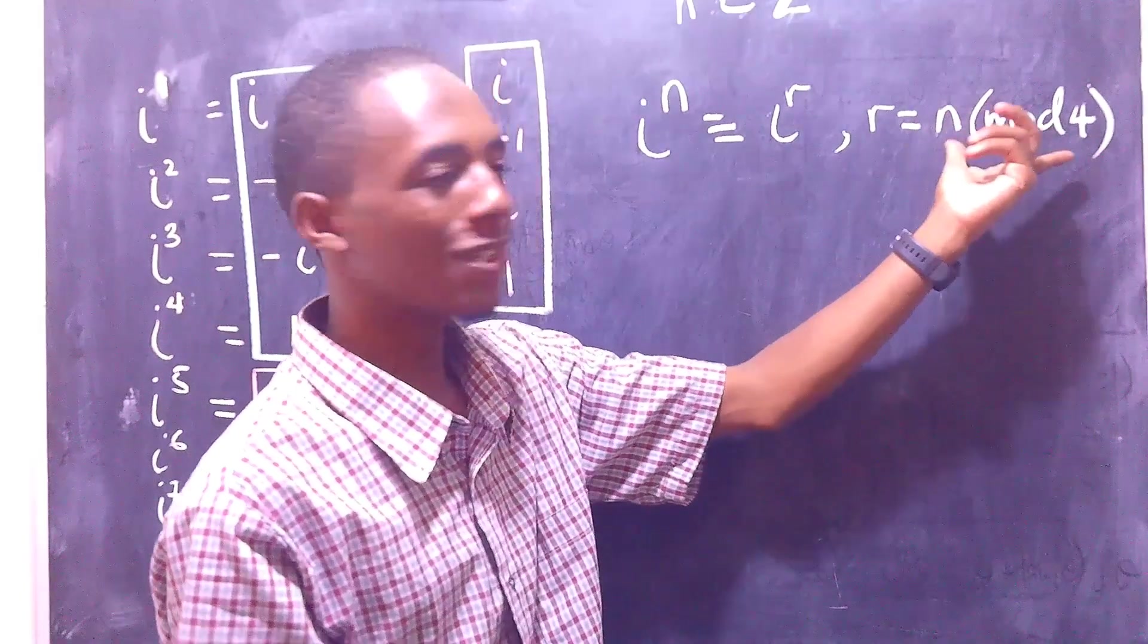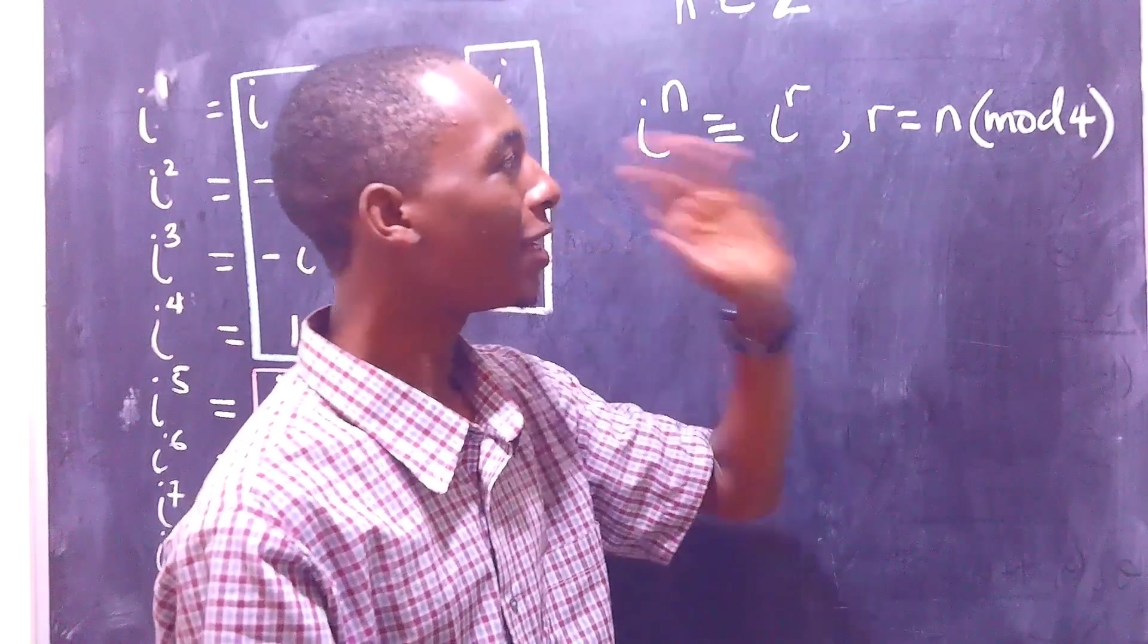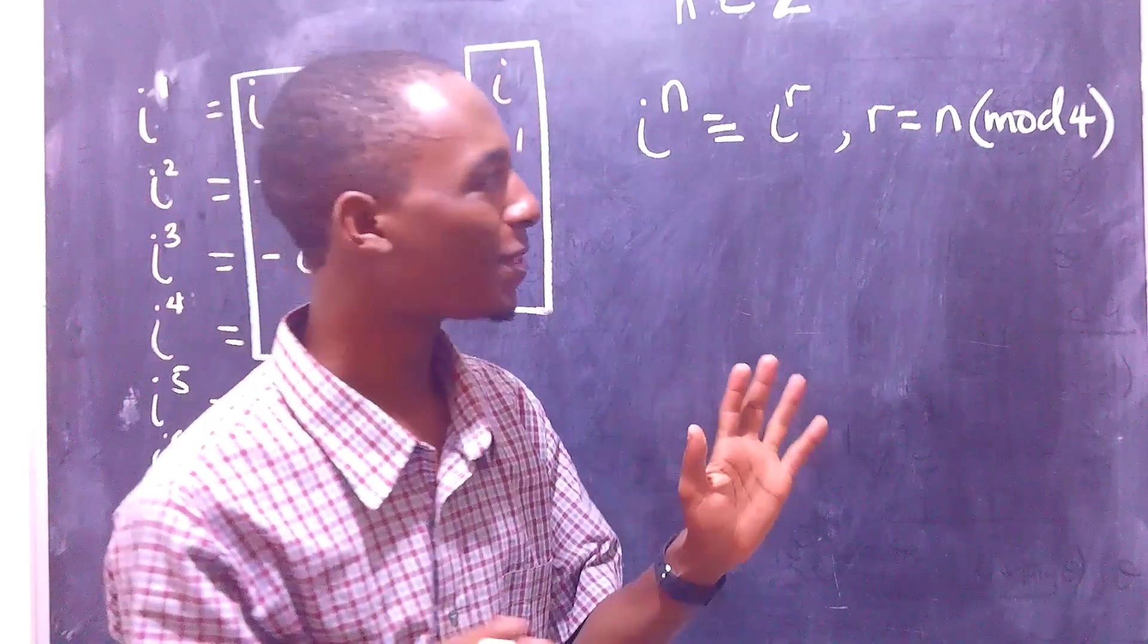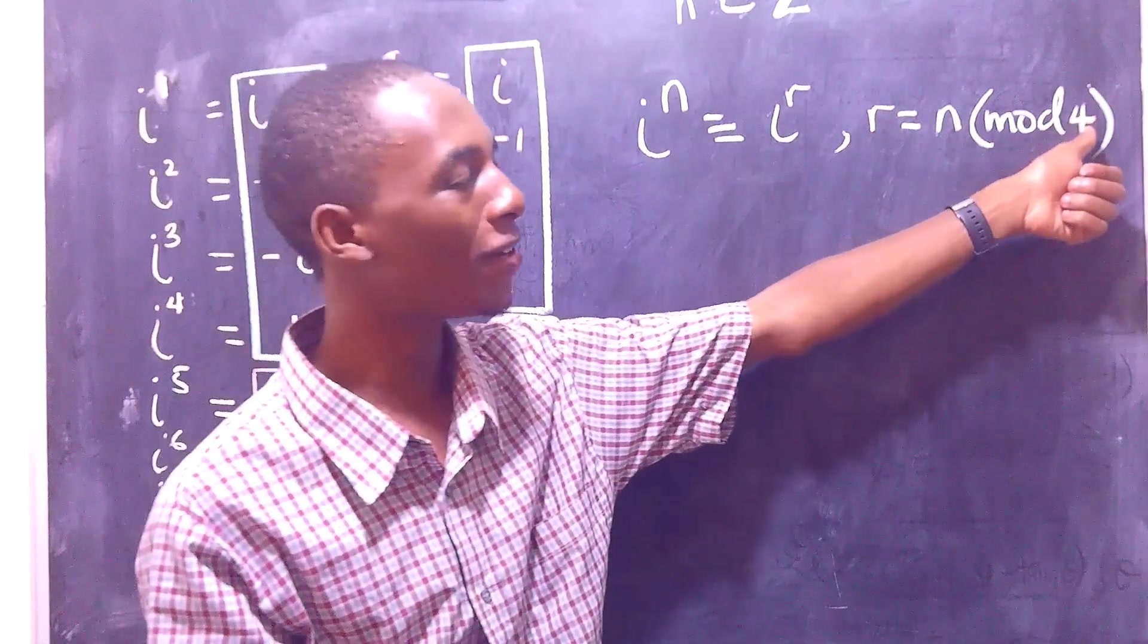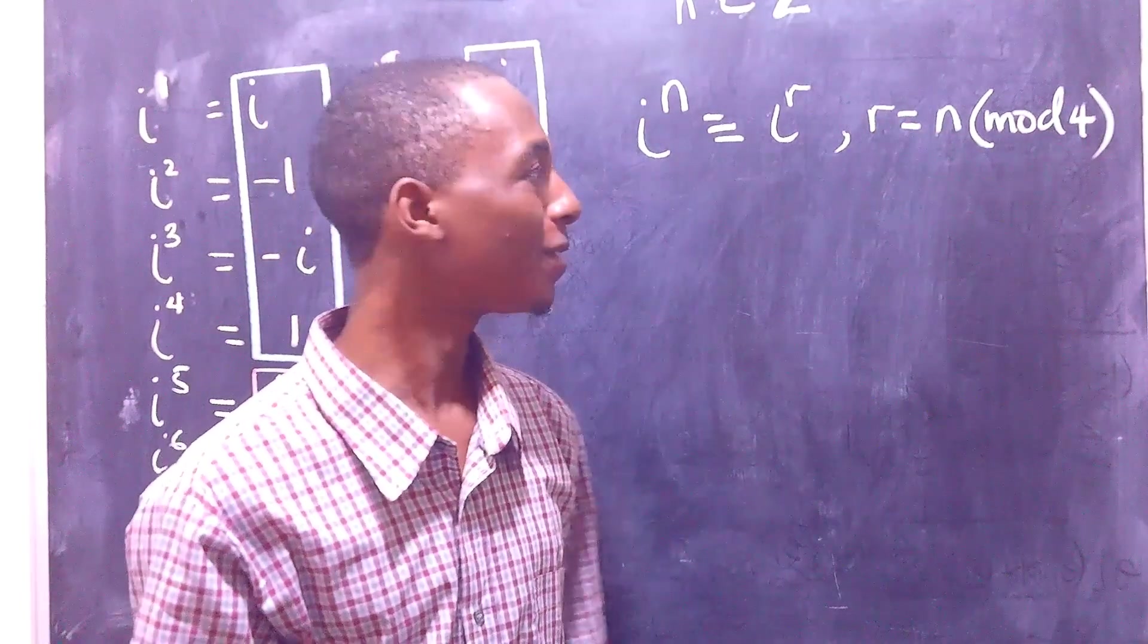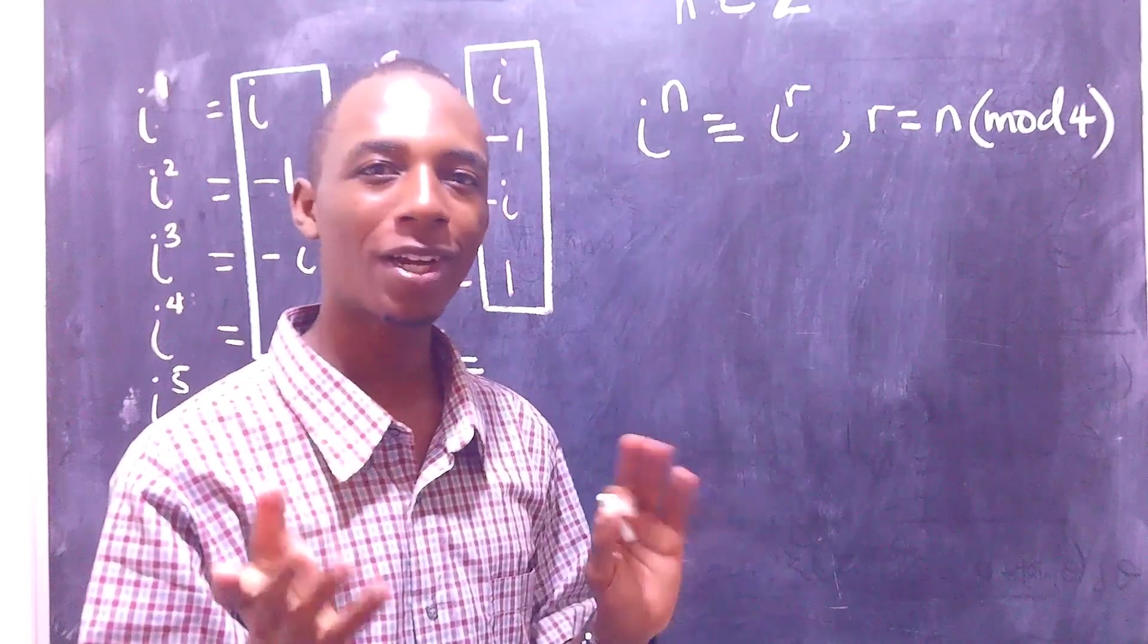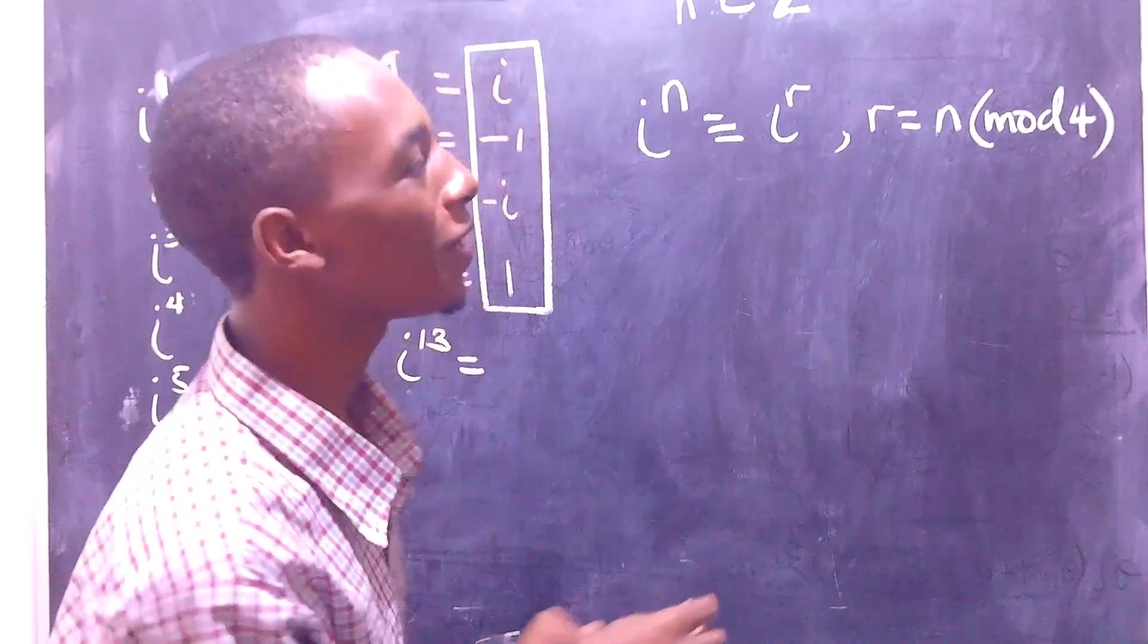N mod 4 simply means a system of counting where we start from 0 and stop at 3, and then we repeat again. And you can simply find the value of r by getting n, dividing by 4, and the remainder is going to be the value of r. That's the modular system. I'll actually leave a link in the description to some website, probably Khan Academy, where you can read more about modular arithmetic.